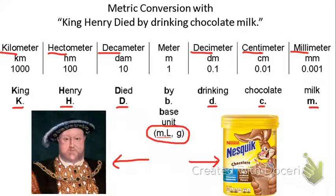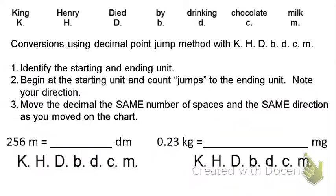Let's try some conversions. We have the sentence across the top. We're going to be using the decimal point jump method using K, H, D, B, D, C, M, or King Henry died badly drinking chocolate milk.